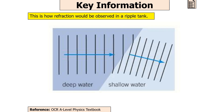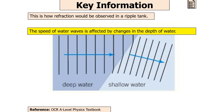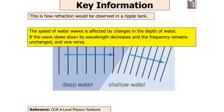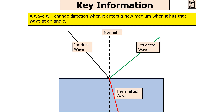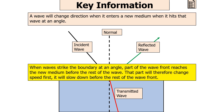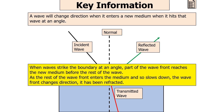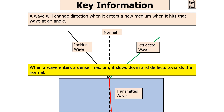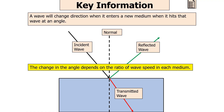This is how refraction is observed in a ripple tank: the speed of water waves is affected by changes in depth, so if the wave slows down its wavelength decreases while frequency remains unchanged. A wave changes direction when it enters a new medium at an angle — part of the wavefront reaches the new medium first, changes speed first, and slows down before the rest. As the rest of the wavefront enters and slows down, the wavefront changes direction — it has been refracted. When a wave enters a denser medium it slows down and deflects towards the normal. The bigger the change in wave speed, the bigger the change in angle.